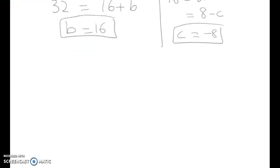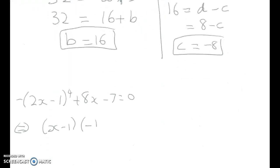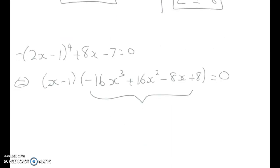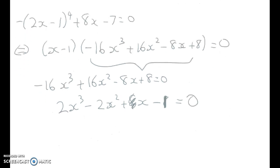We can now take the a, b, and c and write it as follows. We started with negative 2x minus 1 to the 4 plus 8x minus 7 equals 0, and we can now say that that's equivalent to x minus 1 times negative 16x cubed plus 16x squared minus 8x plus 8 equals 0. This is a cubic, we've got to get 3 solutions out of that. Let's divide through by negative 8, and we get 2x cubed minus 2x squared plus x minus 1 equals 0. Let's take a look at that, and we're going to call that thing q(x).